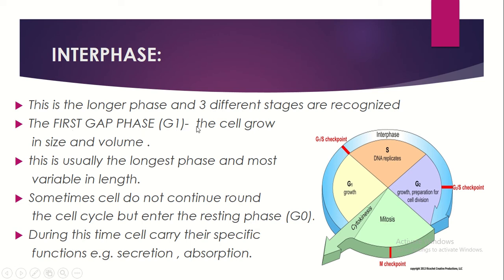The first gap phase, G1, is where the cell grows in size and volume, enabling it to divide. G1 is usually the longest and most variable phase in length, since division time depends on the individual cell. Sometimes cells do not continue around the cell cycle but instead enter a resting phase called G0.